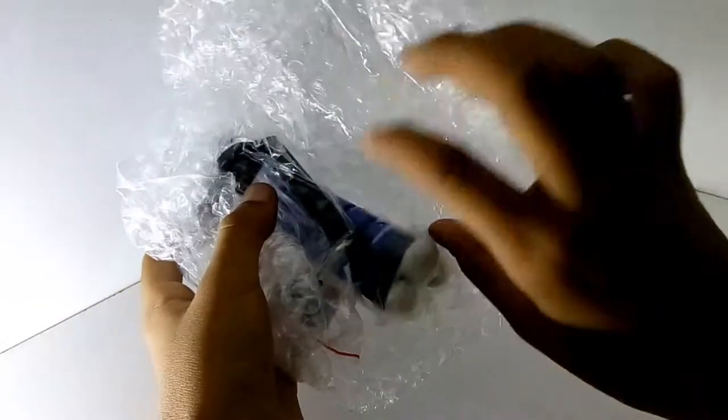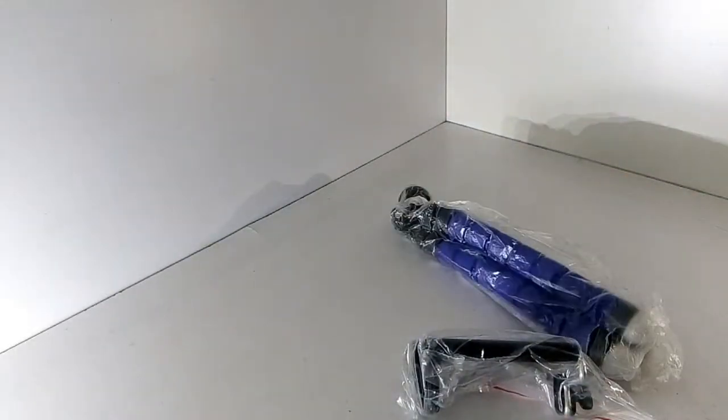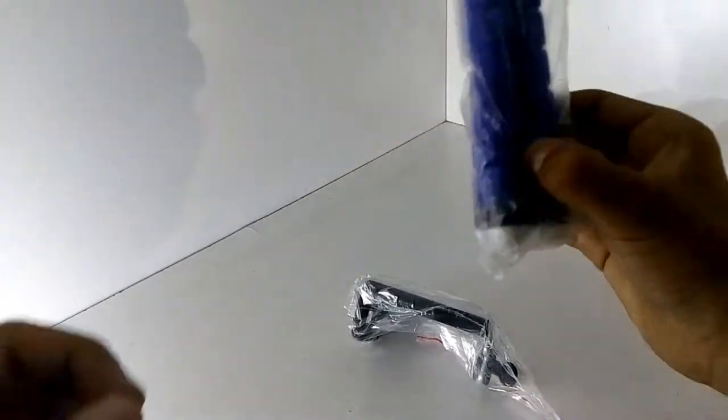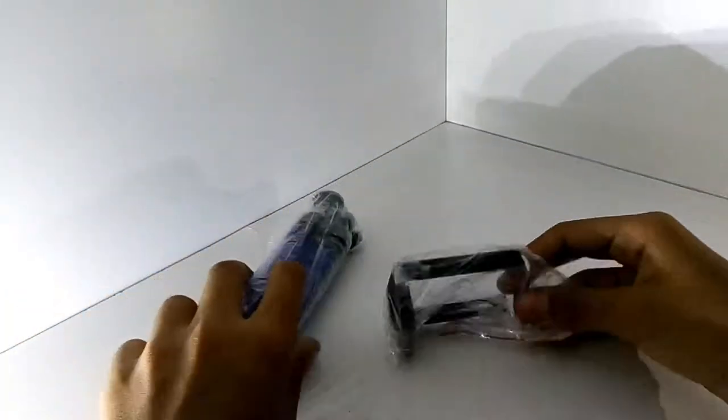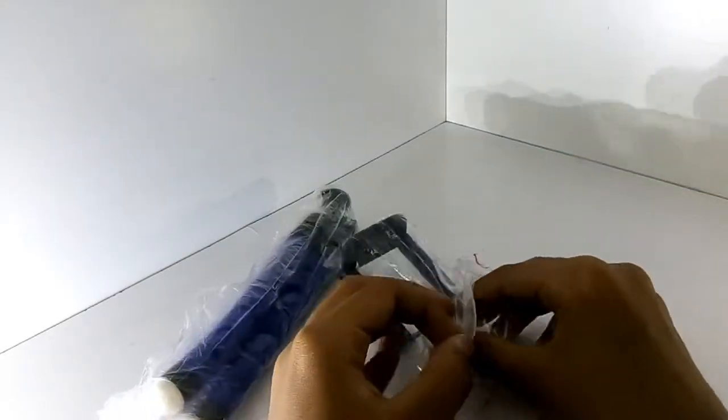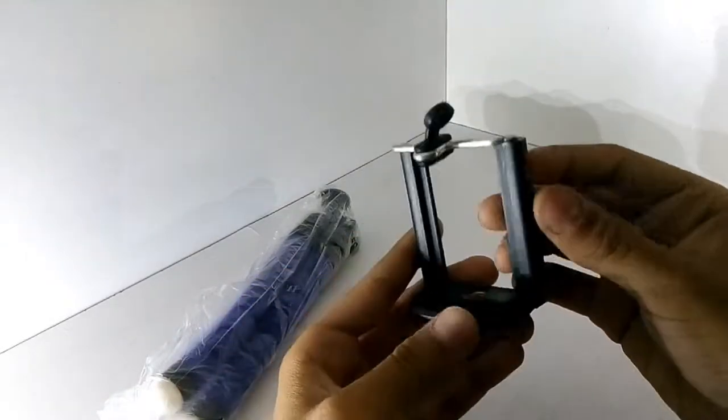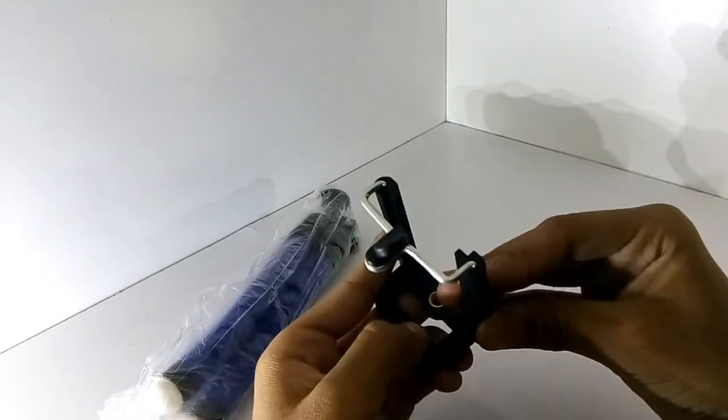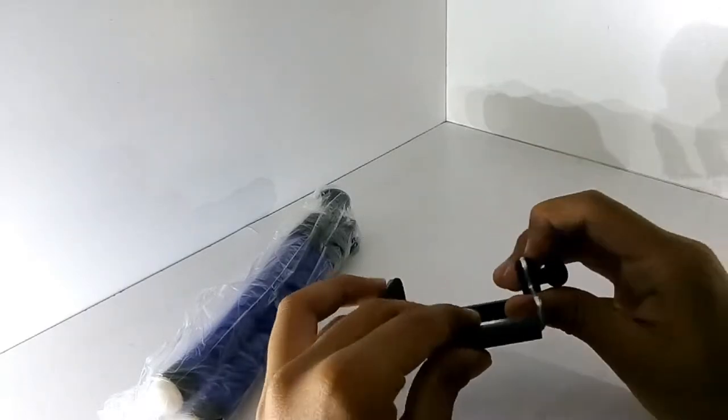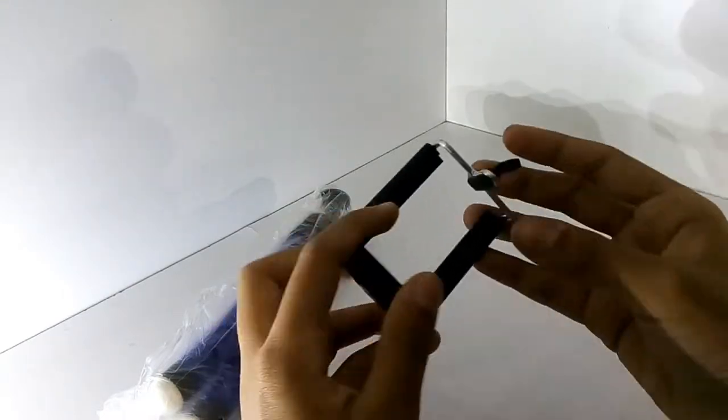So this is the tripod, let's keep this aside and check it. This is the mobile holder which you will require to hold your mobile. Build quality is nice, this is a matte finish, this is a grip and this is also a grip to handle your mobile.